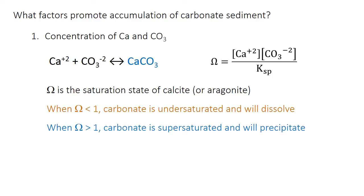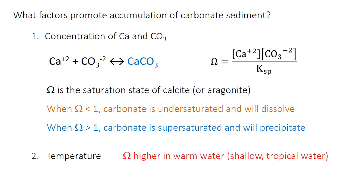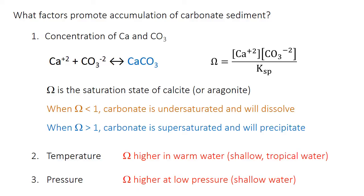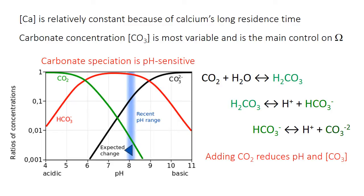Given this relationship that omega greater than one favors precipitation, you can probably tell that precipitation is more likely when there is either greater calcium concentration and/or greater carbonate concentration in the ocean. Saturation is also higher, and it's a lot easier to precipitate calcium carbonate in warmer water, for example in shallow tropical oceans, as well as at lower pressure, so in shallow water. The saturation state is primarily affected by the ion concentrations, but calcium concentration is relatively constant throughout the oceans because the element has a long residence time and is well mixed. Therefore, it's carbonate ion concentration that's the main control, because it's more variable throughout the ocean, especially because of the effect that pH has on carbonate speciation.